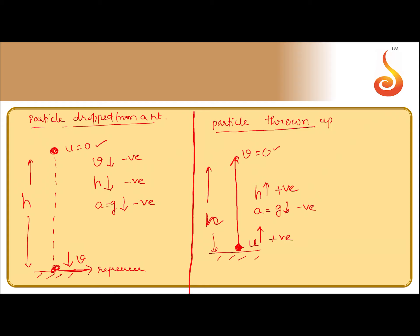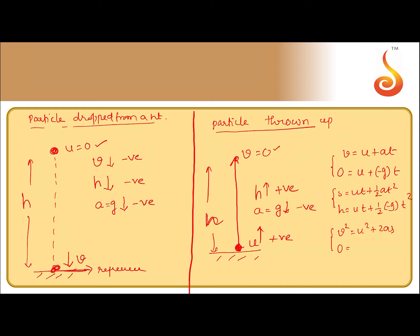While writing the equations of motion: the first equation of motion becomes v = u + at, which is 0 = u + (−g)t. The second equation of motion h = ut + ½at² is written as h = ut + ½(−g)t². The third equation of motion v² = u² + 2as becomes 0 = u² + 2(−g)h.